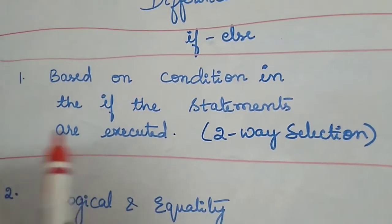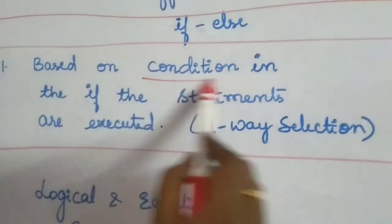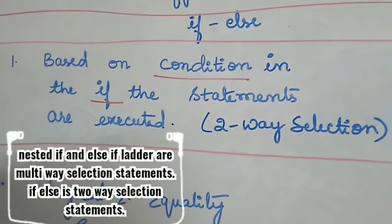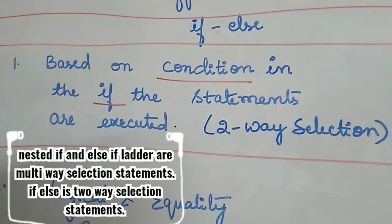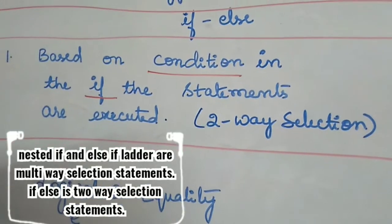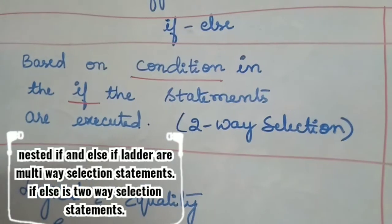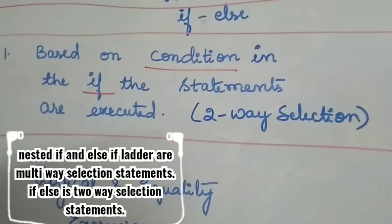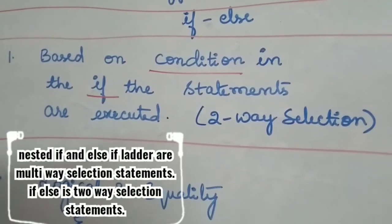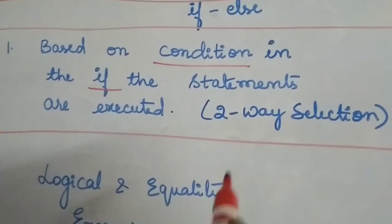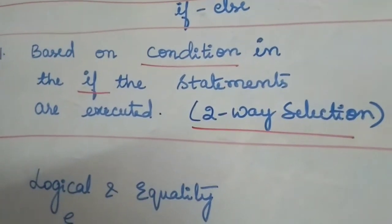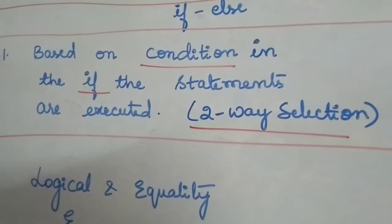Another difference between if-else and switch: in if-else, execution is based on the condition in the if. Whatever expression we write is evaluated during runtime, so the outcome is not known in advance. Based on the expression values, it decides at runtime which if or else-if in the ladder is executed. This is called two-way selection — if the condition is not true, then else is executed.